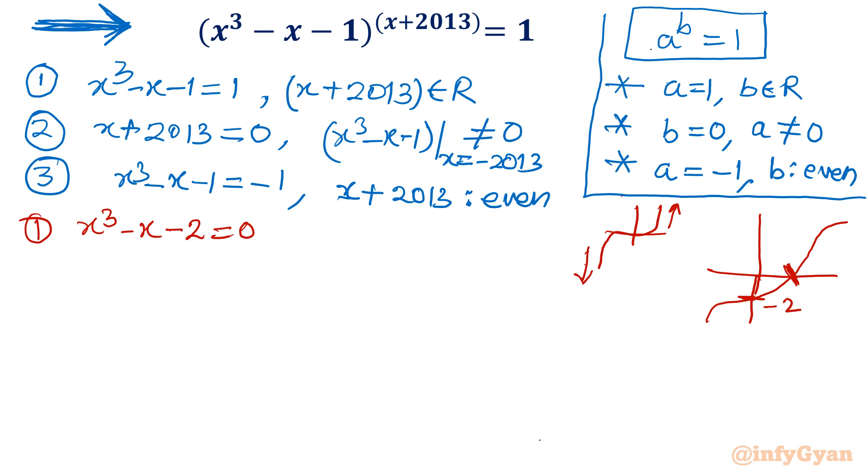Let's find out that solution. If I will write f of 1, 1 minus 1 minus 2, minus 2 negative. f of 2, 8 minus 4, 4 positive. What I am trying to show? Because of sign change is there, that means one real solution is in between 1 and 2.